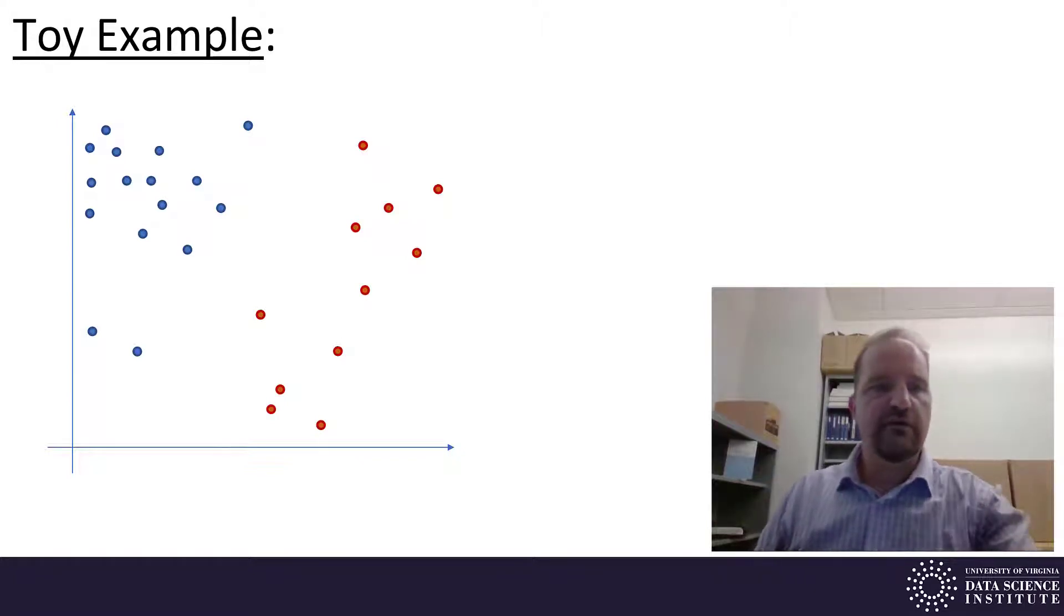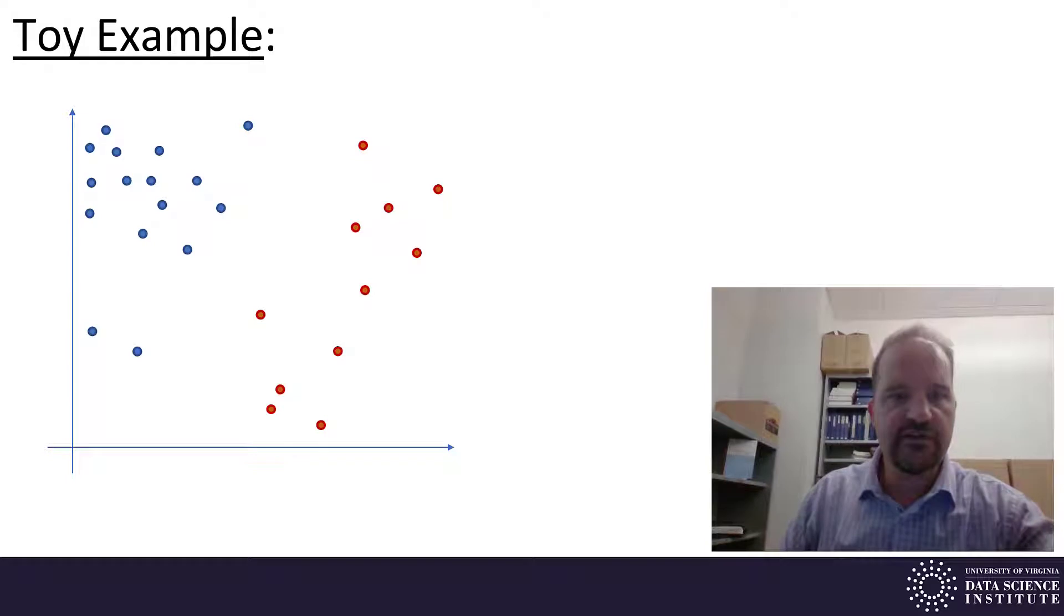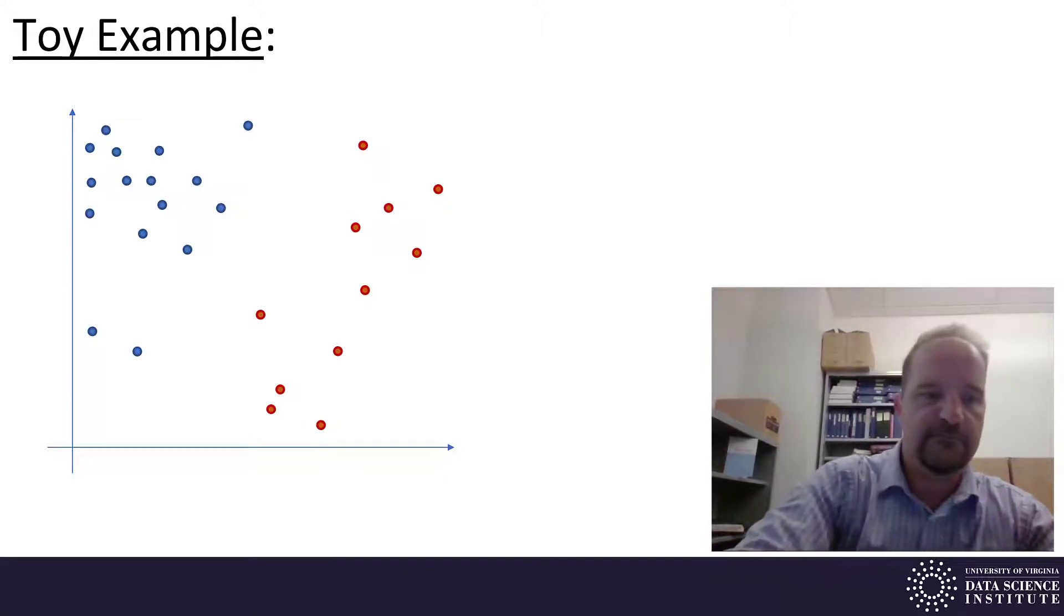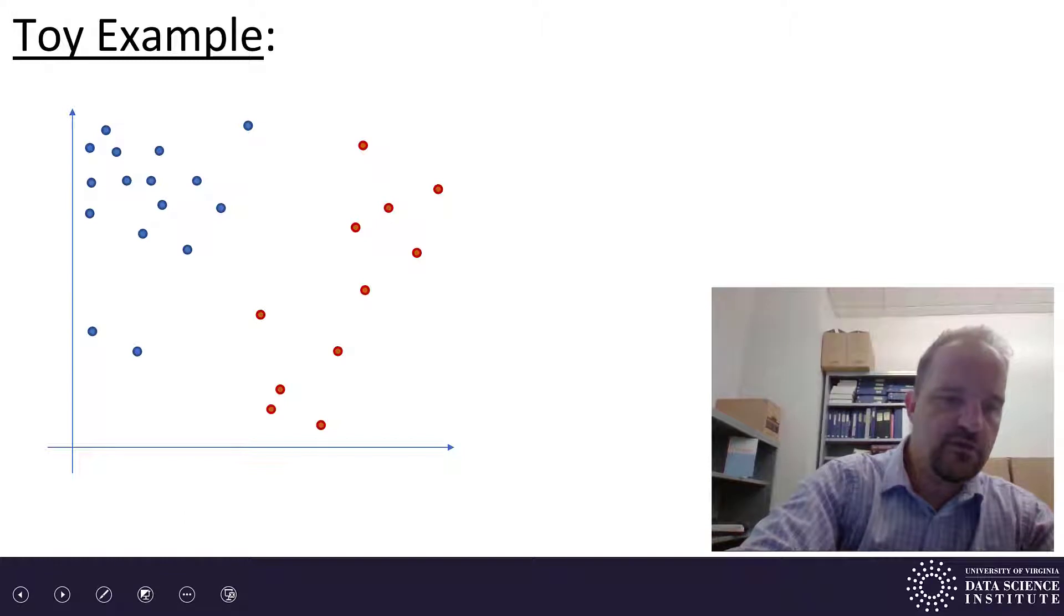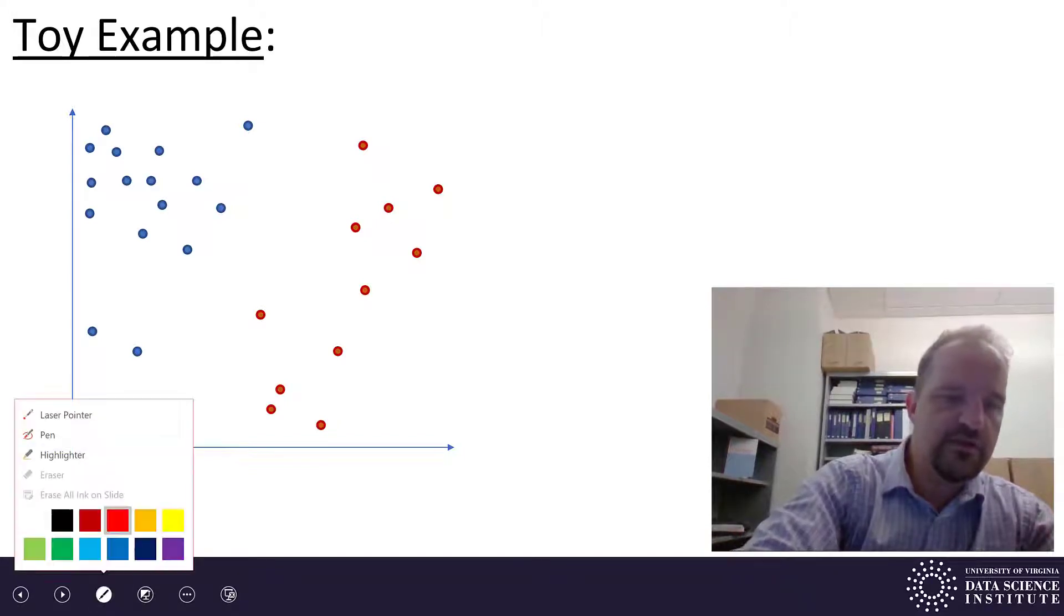Here I have a data set with two classes I've just made up. Suppose I'm going to try to use something that estimates my classification assuming some distributions for the data. Let's pick QDA.